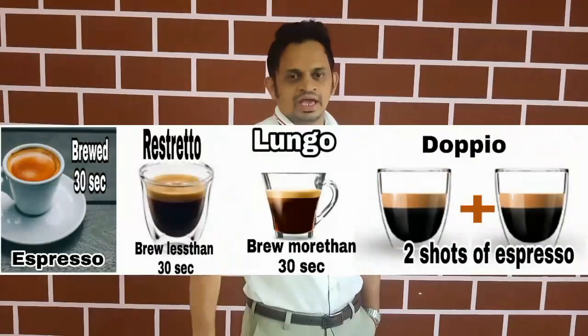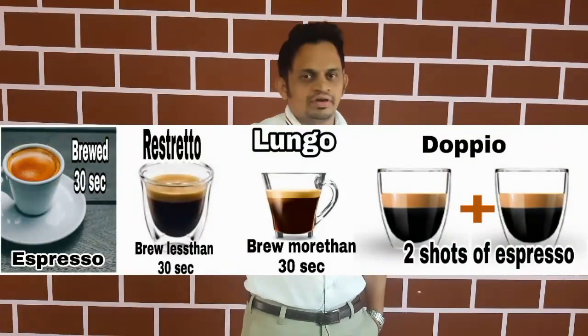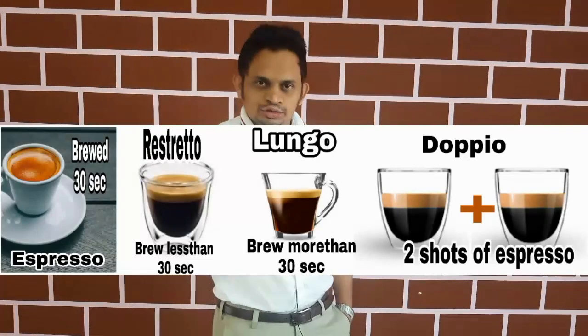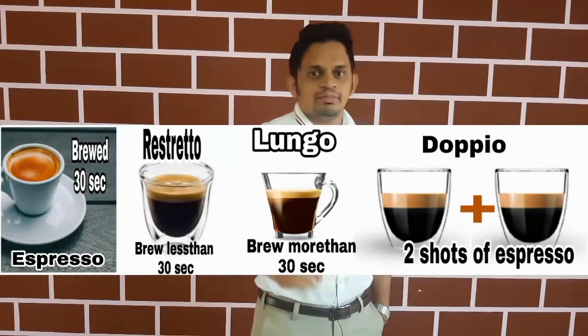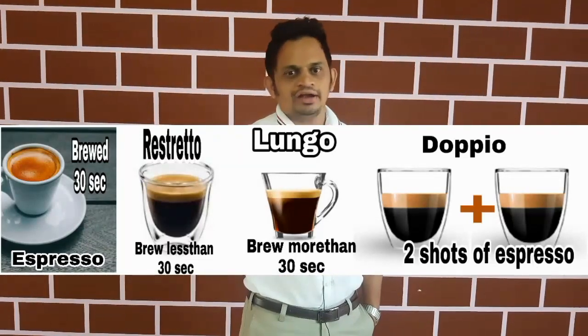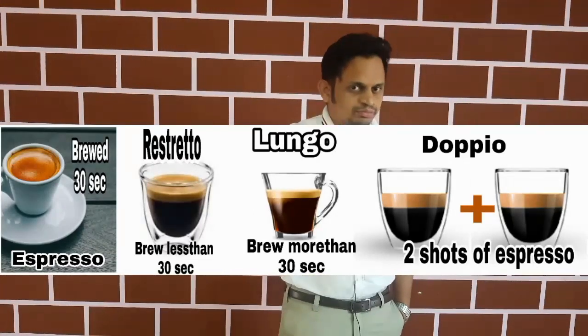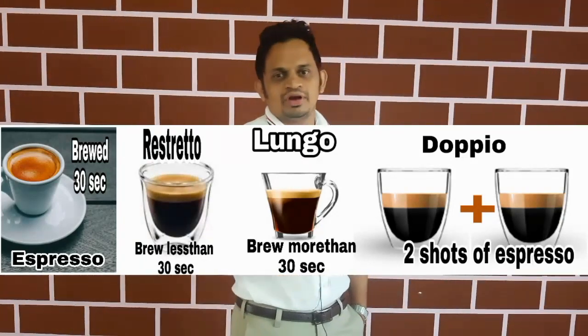For easy understanding, I've mixed coffees with human relations to help you understand easily. I want to introduce you to the espresso family. Espresso has a little brother named ristretto, two big brothers named lungo and dopio, and a girlfriend named americano.